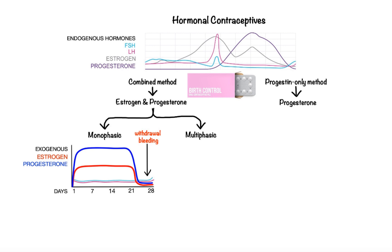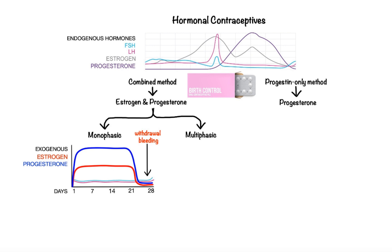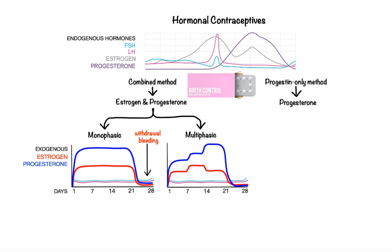On the other hand, we have multiphasic formulations. In this type of combination birth control, the pills deliver varying levels of estrogen and progestin that intend to mimic the natural hormonal fluctuations, as well as reduce the total exogenous hormone dose per cycle. Additionally, with extended cycle contraceptive regimens, women can end their menstrual periods altogether by continuously taking combined estrogen-progestin pills beyond the initial 3 weeks.